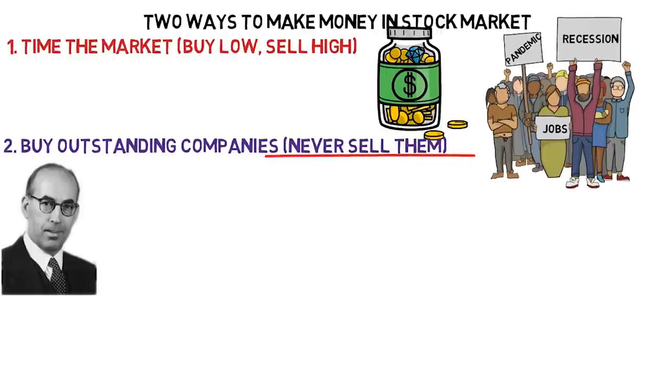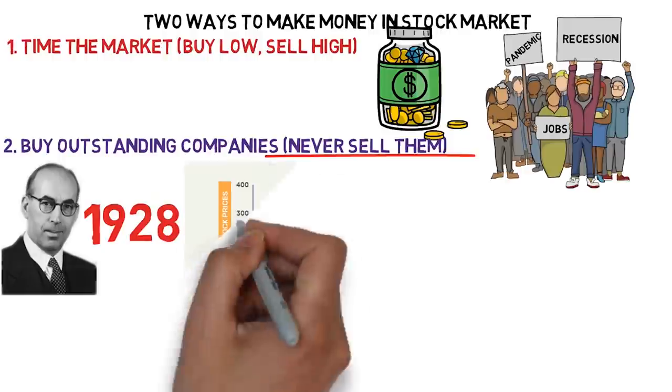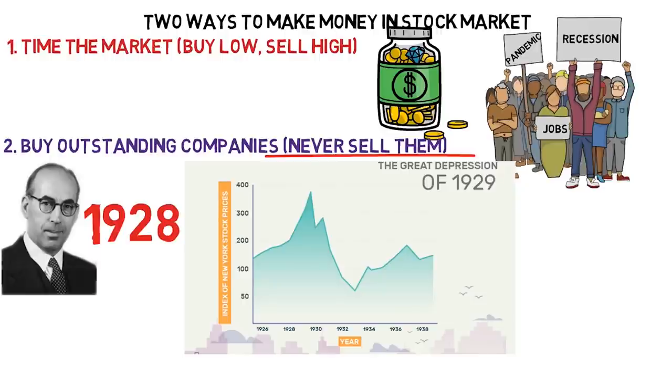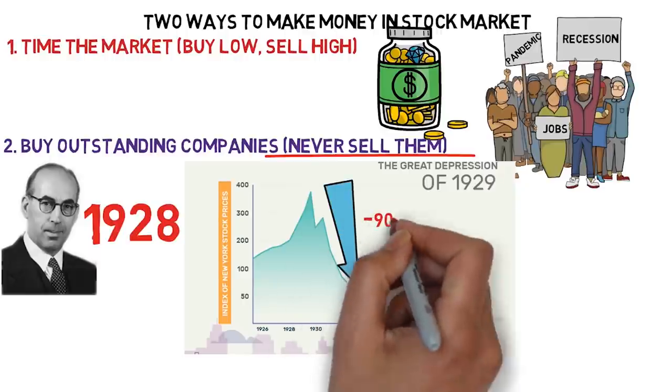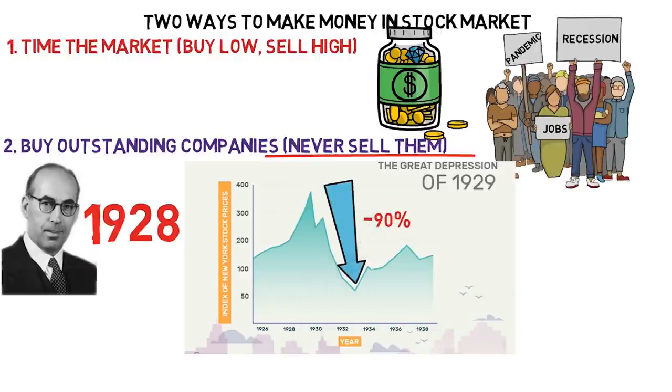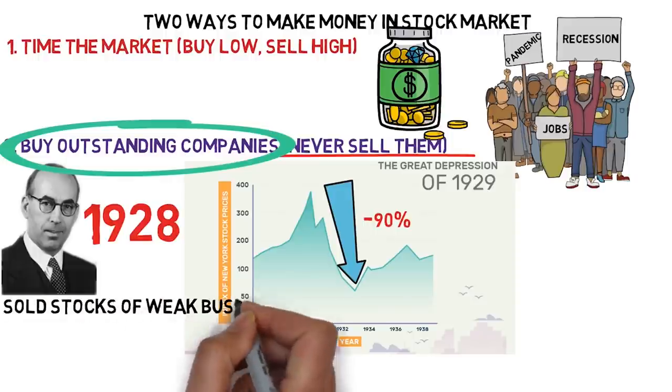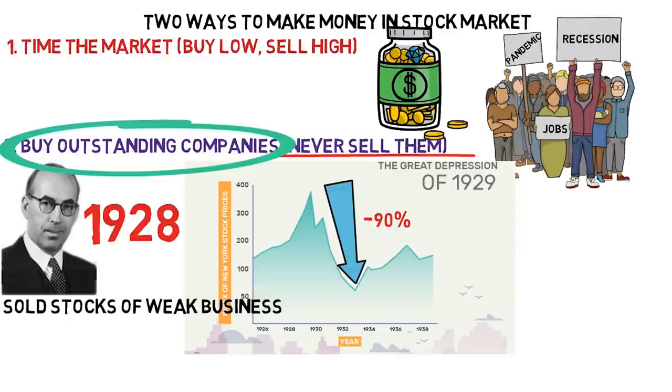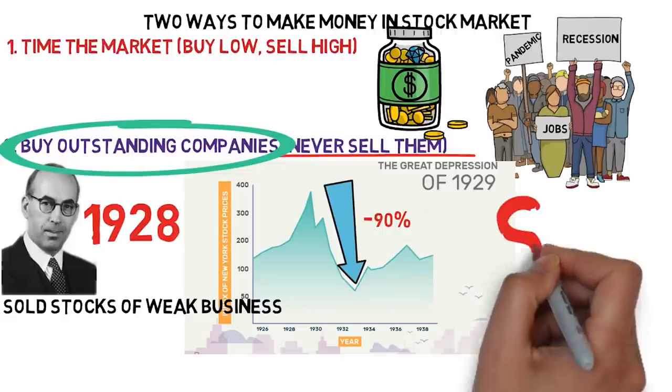Mr. Phil Fisher started his investing career in 1928, just before the Great Depression of 1929, when America's market lost more than 90% of its value. Over the years, he developed his style of investing in great businesses and holding them for a very long time. As he grew in his investing career and developed confidence in very few businesses, he added money to them and sold the businesses which he thought were weak. You will be surprised to know that the number of companies in his portfolio reduced to just six.